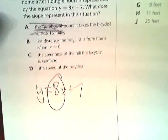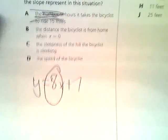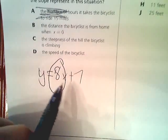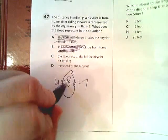Letter B says the distance the bicyclist is from home when x = 0. Well, if x = 0, that's times 8, so it'll cancel everything out. That's irrelevant. That would be the zero point, which would be 7. But in this case, we're asked about the slope.